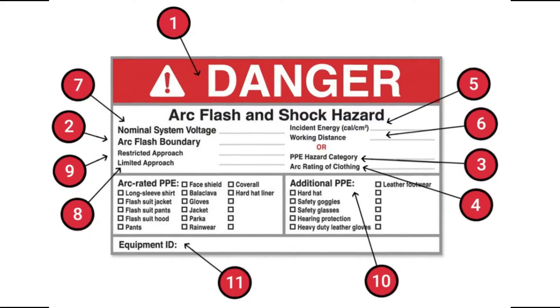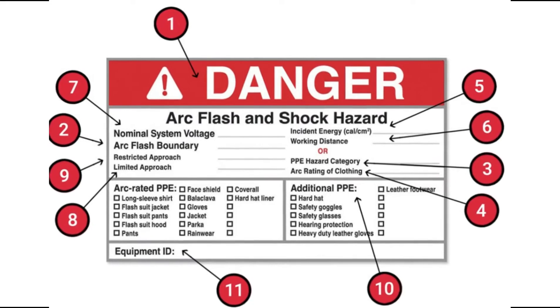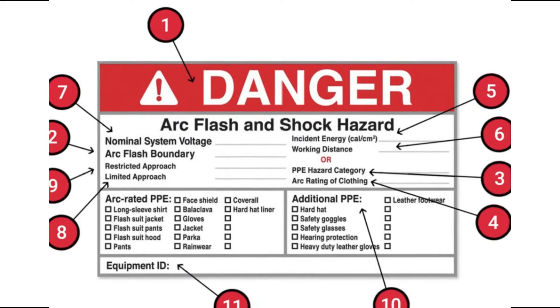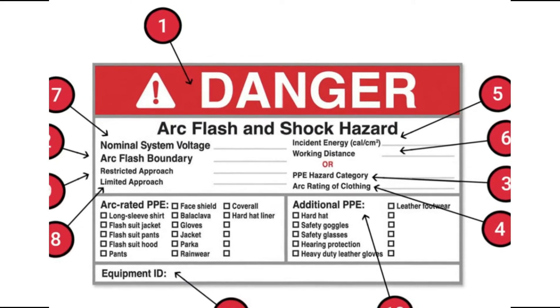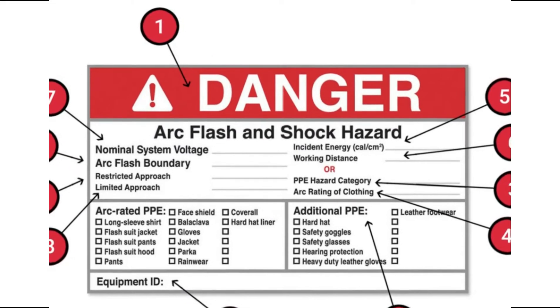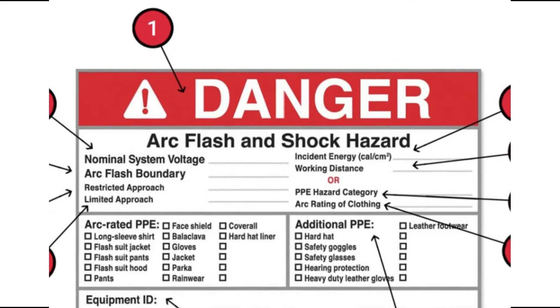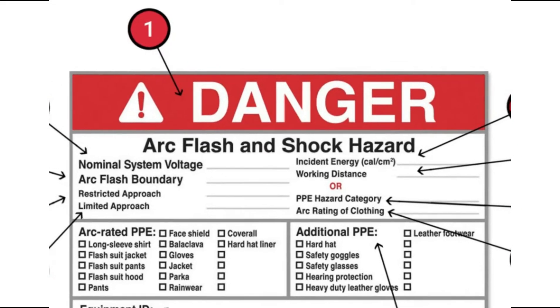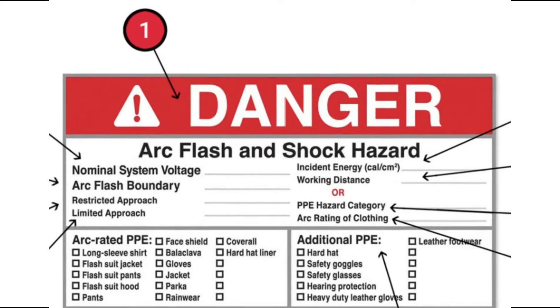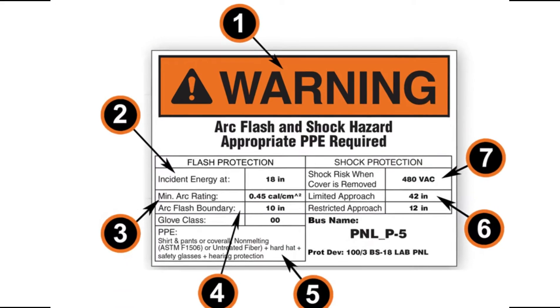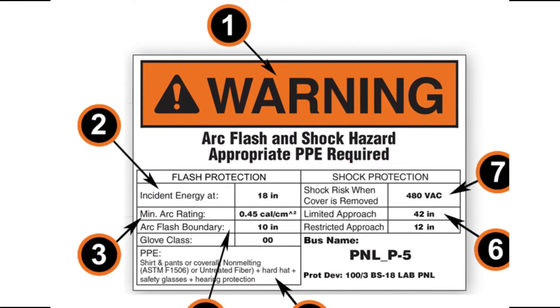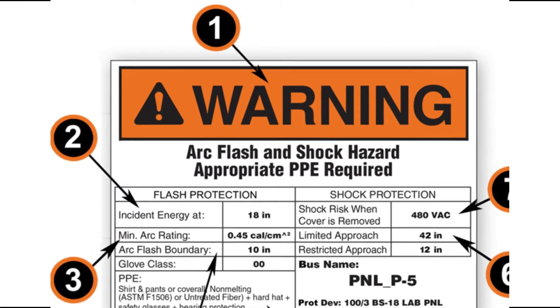The next page shows a breakdown of the arc flash label and the information required. Number one: the danger or warning header. A common guideline is to use a danger header when the voltage is over 600 volts or when the incident energy is over 40 calories per centimeter squared. If it is less than that threshold, an orange warning header is typically used.